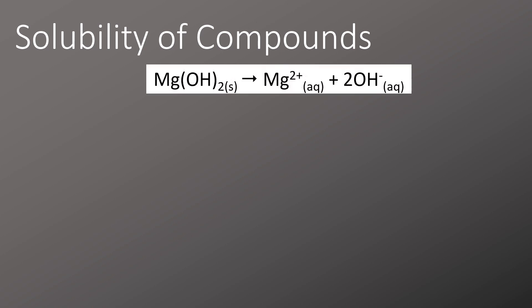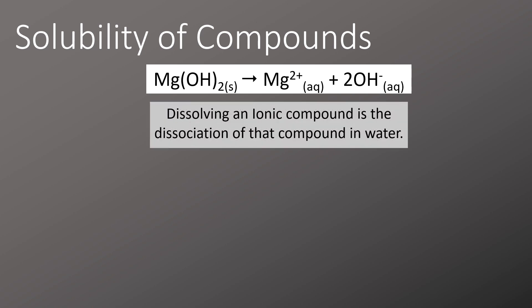When we consider the solubility of compounds, magnesium hydroxide dissolves to form Mg²⁺ ions and OH⁻ ions. The process of dissolving is where we separate the ionic compound and dissociate it into its relevant ions. When we draw these out, it's really important that we remember the state symbols to show that we started with a solid and ended with two aqueous ions.